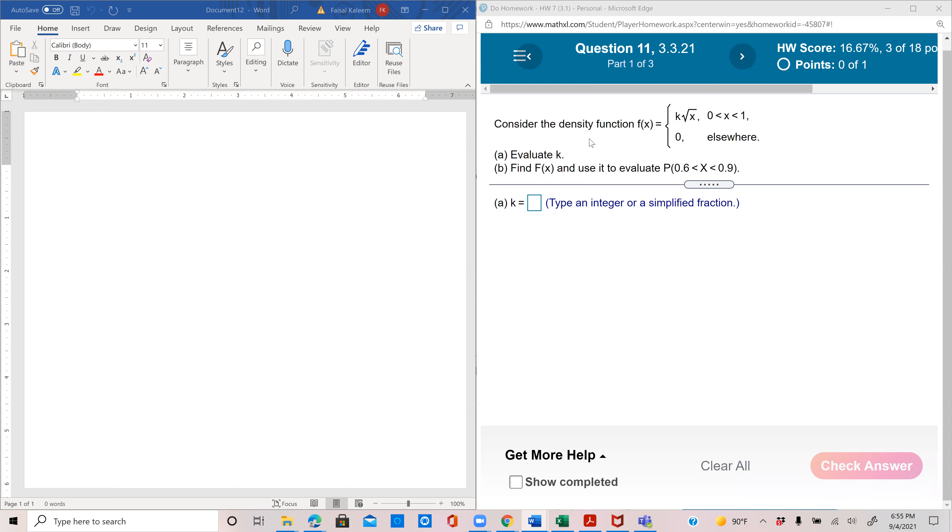Now just as for a discrete probability function the summation over all the x values is 1, for a continuous probability function or a density function the integral from negative infinity to infinity of fx is equal to 1 for a continuous probability function.